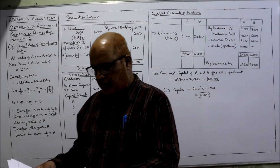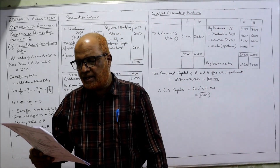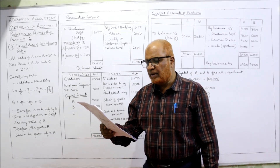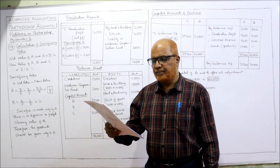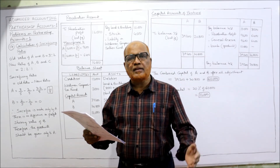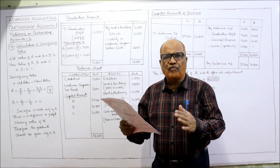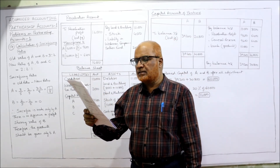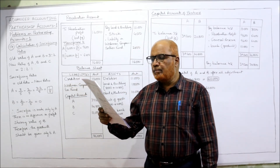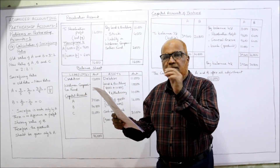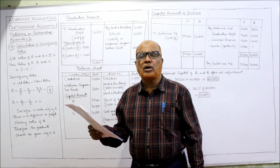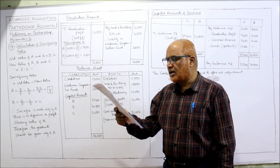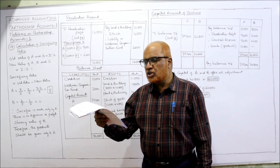The 17th problem: the following is the balance sheet of A and B as at 31st March 2006. C is admitted as a partner on the date. The old partners are A and B, the new partner C is being admitted. Before the admission of C, the balance sheet of A and B shows: A's capital 10,000, B's capital 8,000, creditors, general reserve, workmen compensation fund. The general reserve will be shared by the old partners in the old profit sharing ratio. Assets include debtors, land and building, plant and machinery, stock, cash and bank balance.